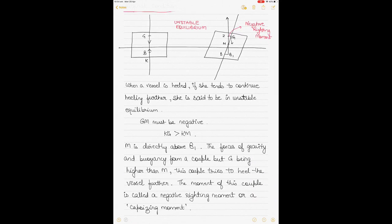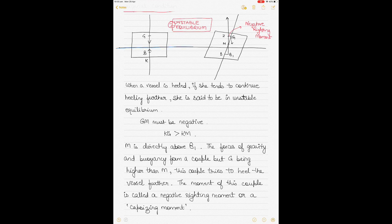When KG is not less than KM, we have a case of unstable equilibrium — the second type. Again, the left diagram shows an upright vessel and the right shows a vessel heeled to starboard. The blue line denotes the water level. B is always the geometric center of the underwater volume. Although B has shifted to B1, when B1 acts vertically upwards and cuts the centerline, it intersects at the transverse metacenter M.